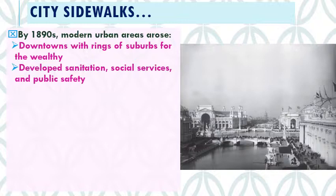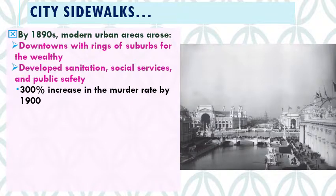Public safety becomes an issue. The crime rate in the United States skyrockets by the end of the 19th century, and cities have to develop what we would think of as a modern police force. Even in the 1890s, police departments were generally pretty limited in how to solve crimes. There's a 300% increase in the murder rate by 1900. City life is exciting and wonderful, offering all kinds of new opportunities, but it's also dangerous, dirty, and deadly.